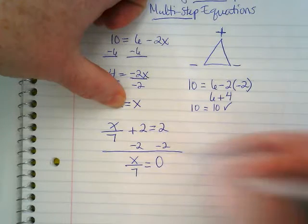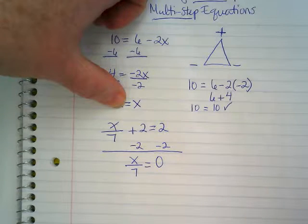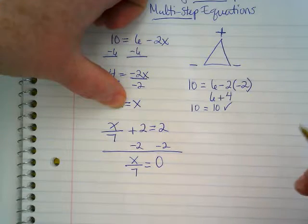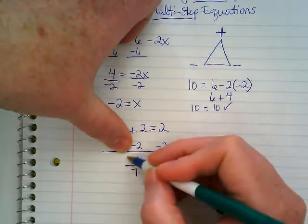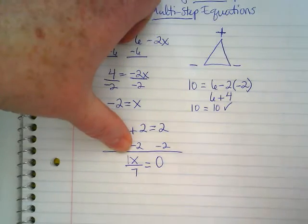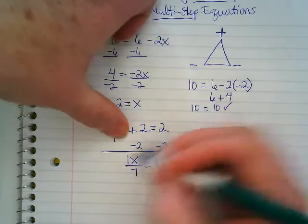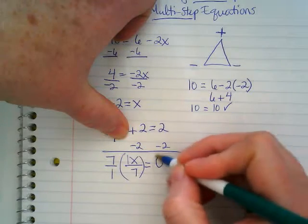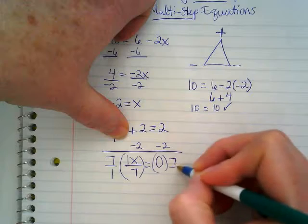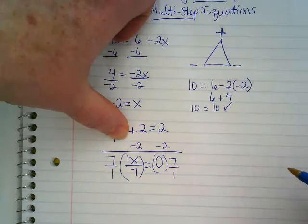Anybody want to guess what this is going to end up? Because now I have x over 7, which really is 1x over 7. It's invisible, right? So the reciprocal of that is going to be 7 over 1, and then I'm going to multiply the same thing on both sides.